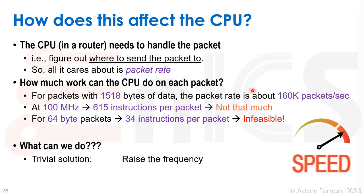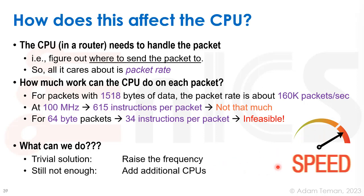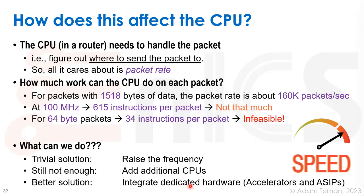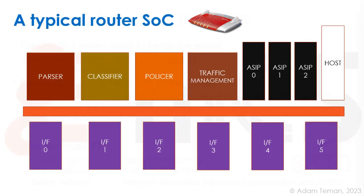One trivial solution is to raise the CPU frequency — using a gigahertz CPU instead of 100 MHz gives a 10x speedup, but raising the frequency has limitations and still may not be enough. We could also add multiple CPUs, each working on a different packet. But really the best solution is to integrate dedicated hardware accelerators.